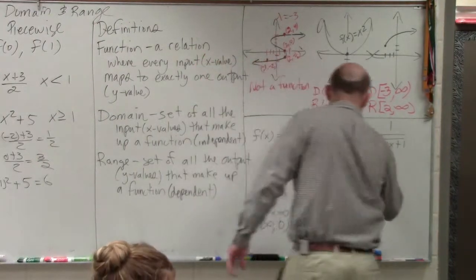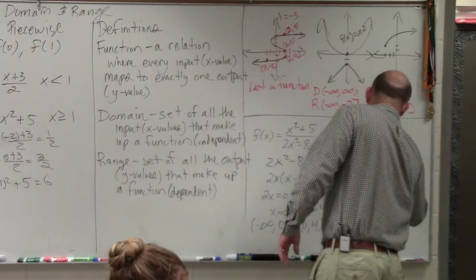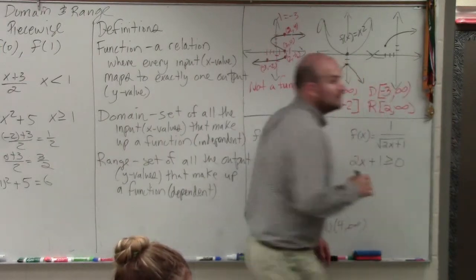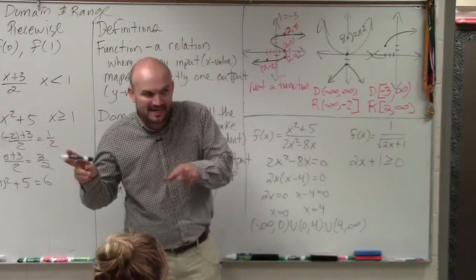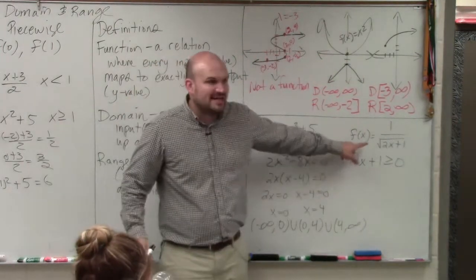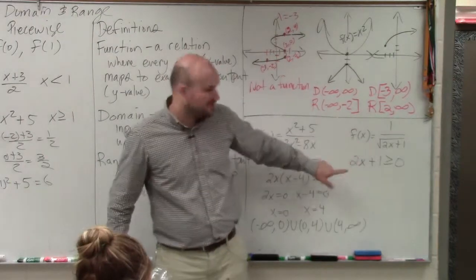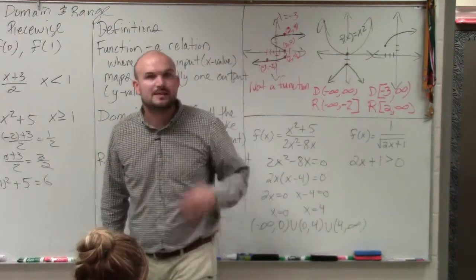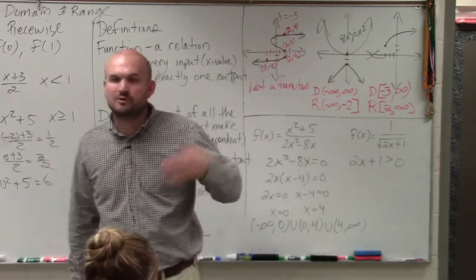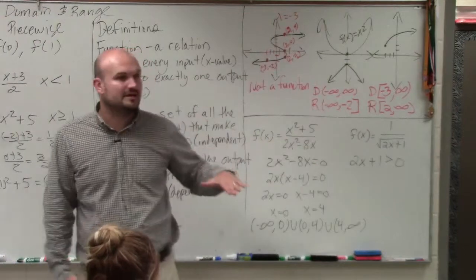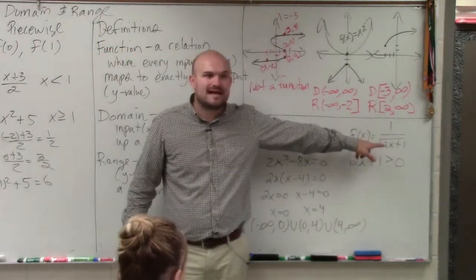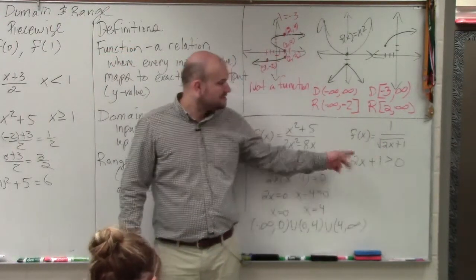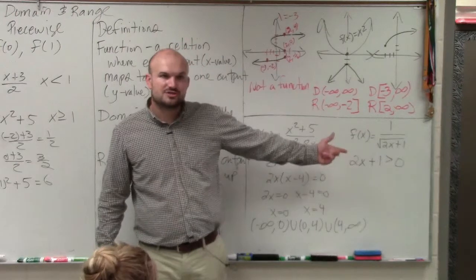So not only can our denominator not equal 0, but whatever's inside of this — whatever number we plug in for x — that can't make that quantity 0. So what you're going to do is say 2x plus 1 has to be greater than or equal to 0. However, the problem in this case is we can't have 0 either. So since this is in the denominator, you just use greater than. Now solve for x.